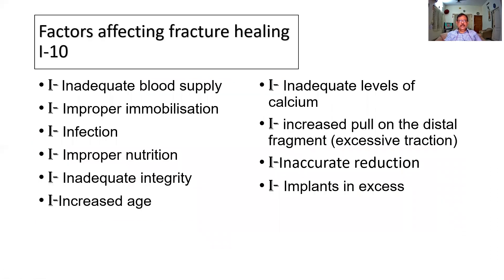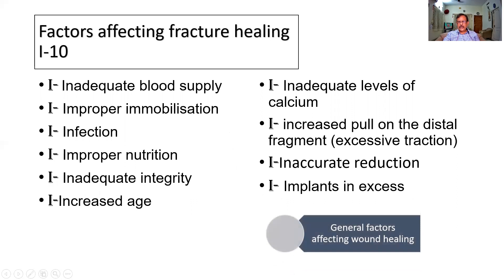What are the factors affecting wound healing? Remember the letter I — there are 11 of these. Inadequate blood supply. Improper immobilization. Infection. Improper nutrition. Inadequate integrity. Increased age. Inadequate levels of calcium. Increased pull on the distal fragment — sometimes too much attraction prevents healing. Inaccurate reduction. Implants in excess. And interposition of soft tissue — this can interfere with fracture healing. All the factors applicable to general wound healing are applicable to fracture healing as well.